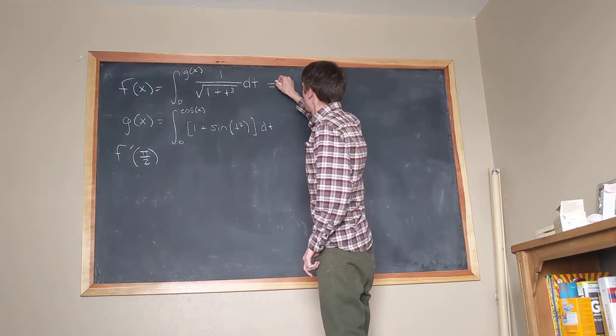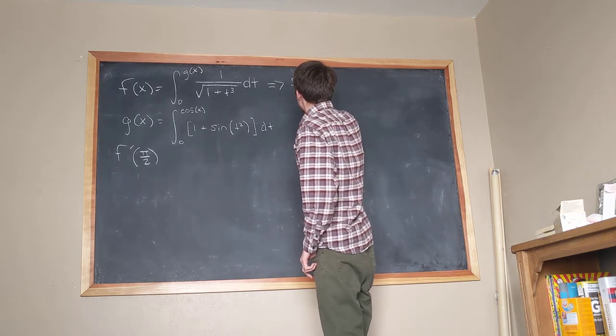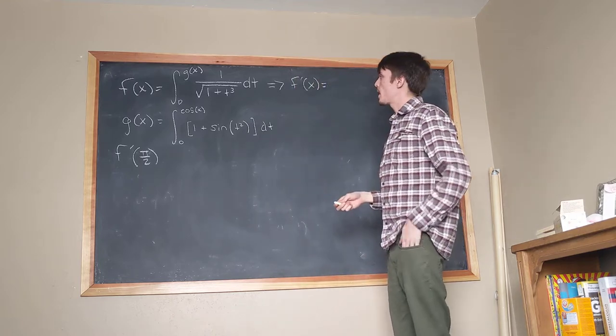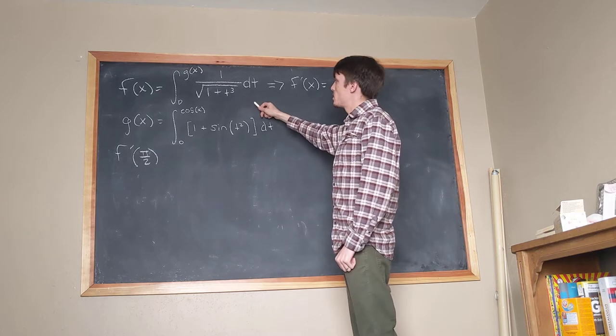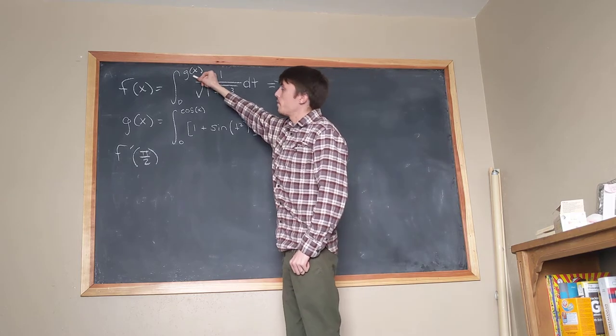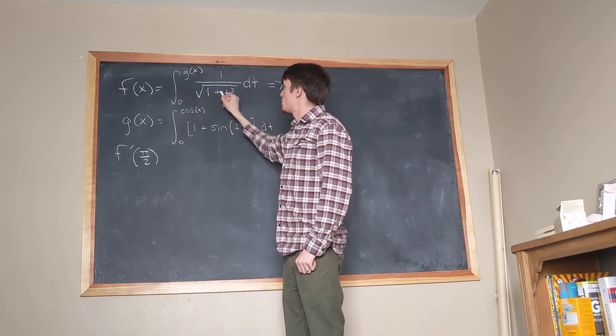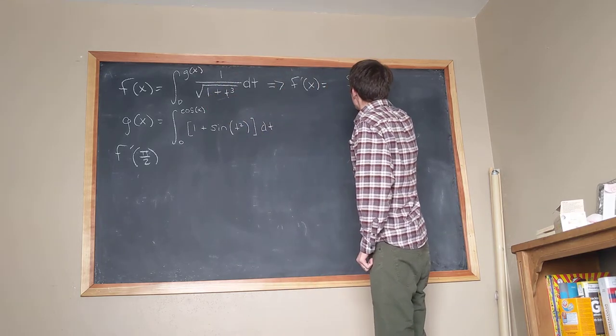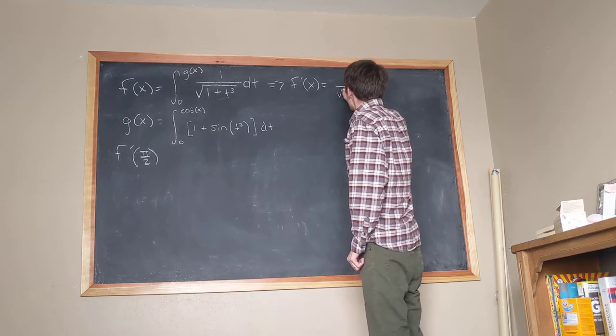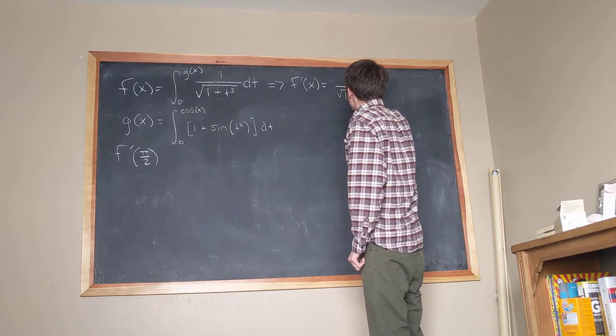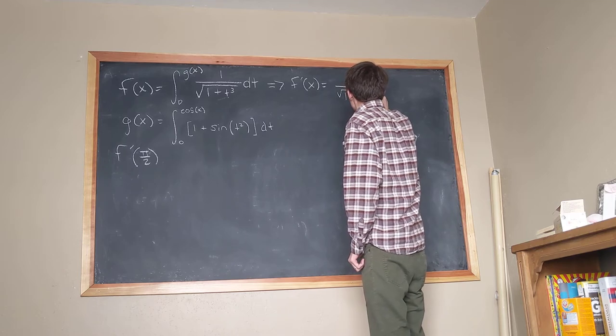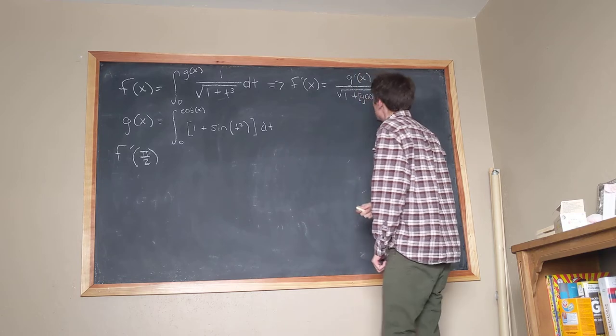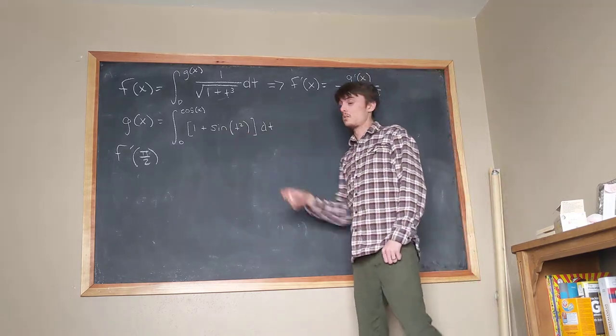So coming off of f, we can calculate f prime of x using the Leibniz differentiation rule. And so when we do that, what we're going to get is that f prime of x is equal to the derivative of g times this thing with g plugged in. So it's cubed. That looks gross too. I mean, g is this thing, so oh my gosh.